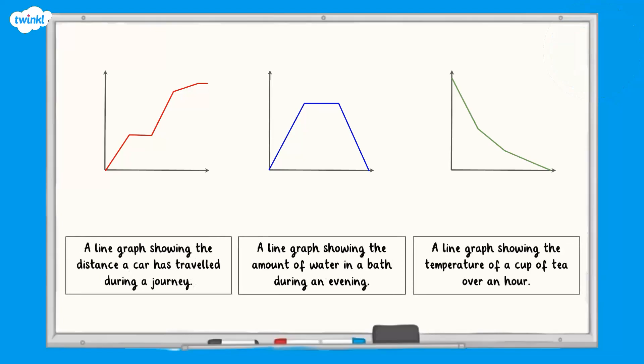Let's check your answers. The distance the car travelled would have increased throughout the journey. So this was shown by the red graph. The water in the bath increased until it was full, stayed the same when it was being used, and then decreased again when the plug was pulled out.